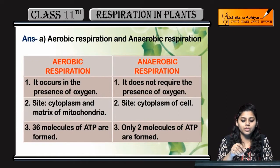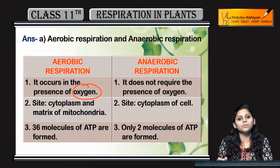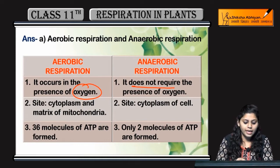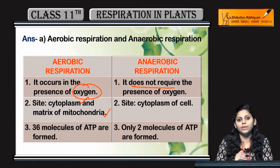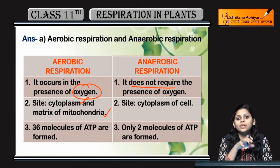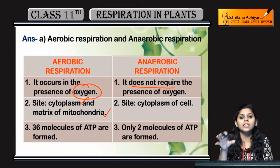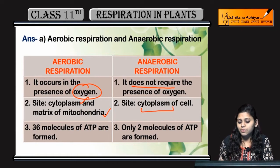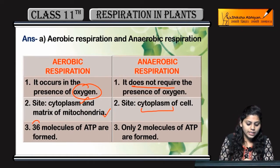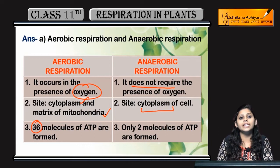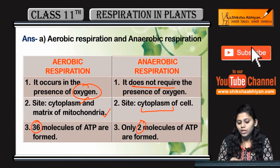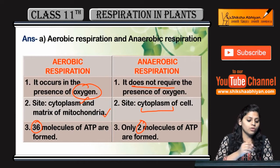Aerobic respiration requires the presence of oxygen, whereas anaerobic respiration does not require oxygen. The site for aerobic respiration is the cytoplasm and matrix of mitochondria — cytoplasm for glycolysis and mitochondria for the ETS and Kreb's cycle. Aerobic respiration generates 36 ATP molecules, while anaerobic respiration generates only 2.